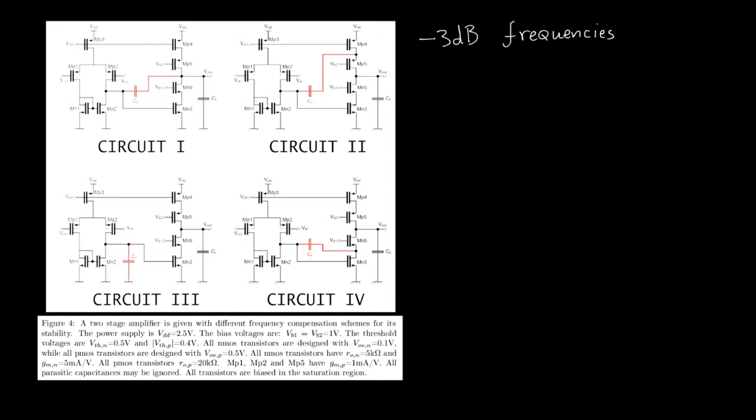In this case, the 3 dB frequency is often a shorthand for the first pole frequency because this typically is the lower value. The first pole frequency is nothing more than the inverse of the time constant of the output of the first stage.